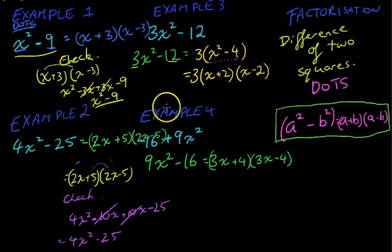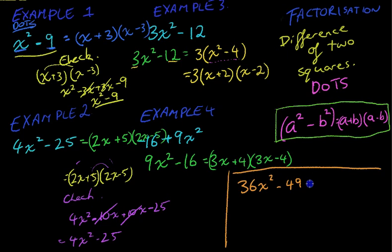I might just write down one and you can give it a try yourself. And then I'll just silently work through it so you can see if you get the right answer. So there's my question there. 36X squared minus 49. Give it a try yourself.